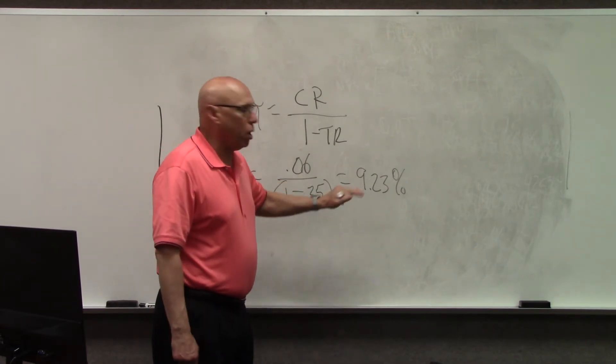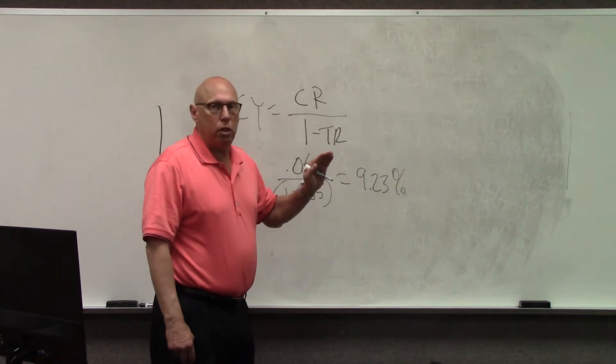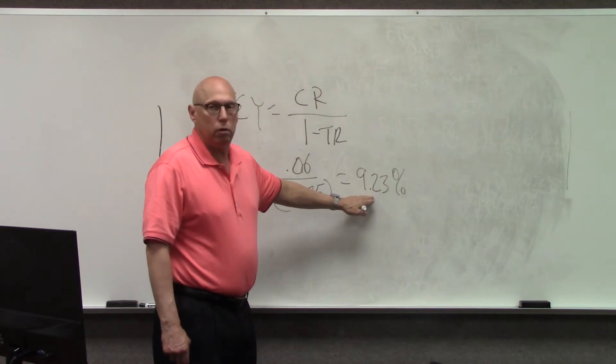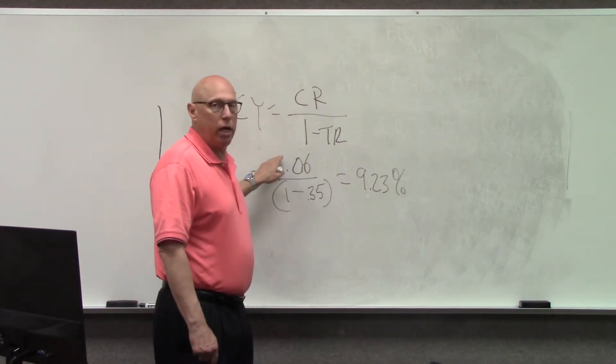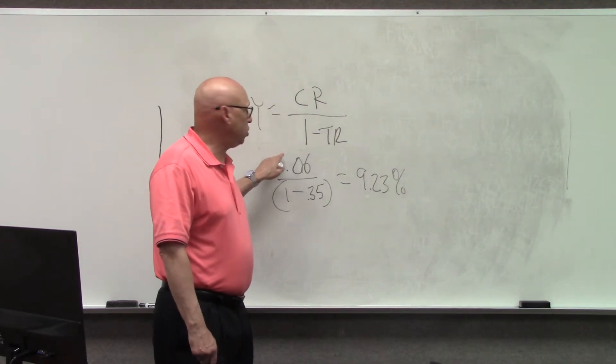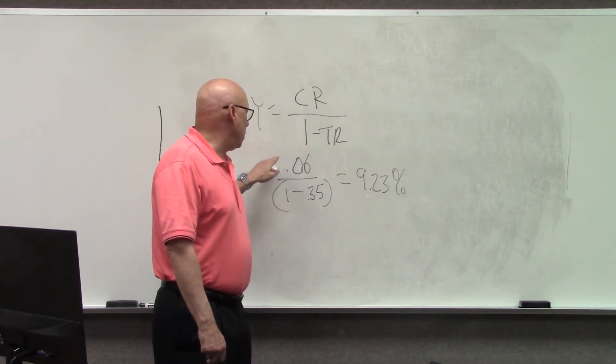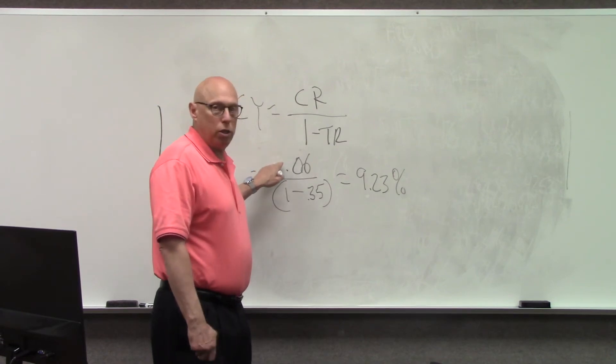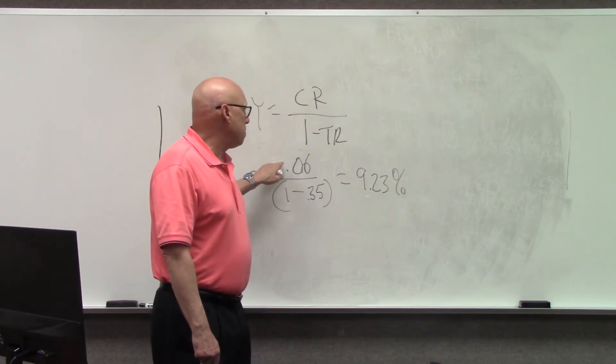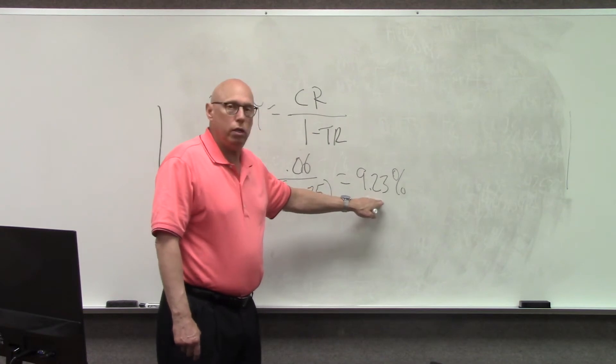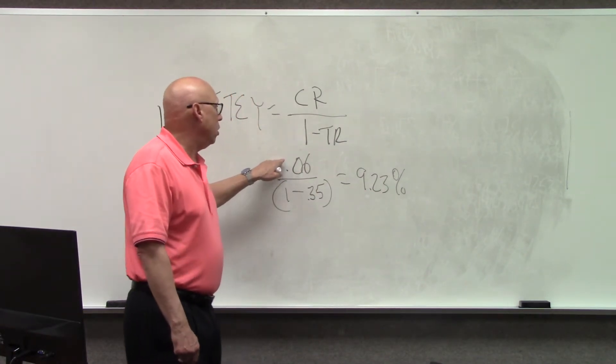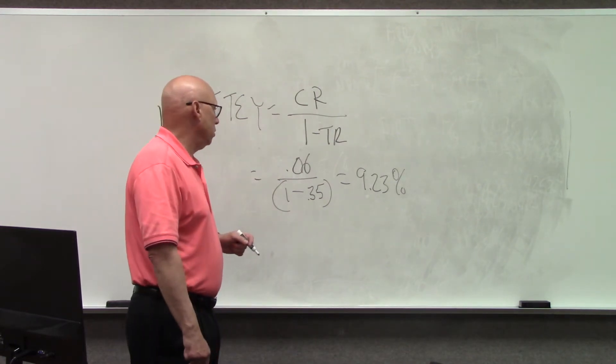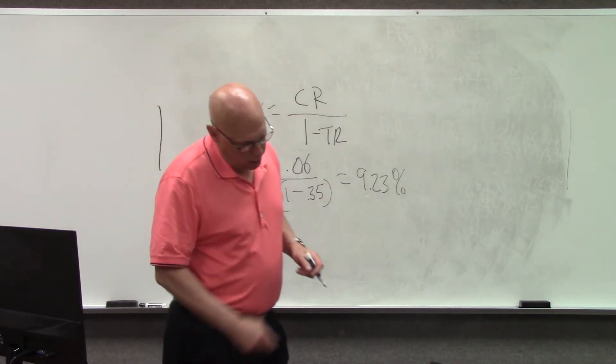What does this mean? This means that a corporation that issues a bond that pays interest of 9.23% after taxes is the same as a state, county, or city government that issues a bond and that has a 6% interest on it. Because you have to pay taxes on this, but you do not pay income taxes, in most cases, on this.